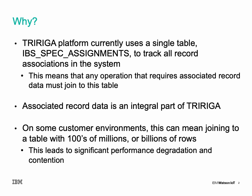So why are we making these changes? Currently the TriRiga platform uses a single table called the IBS Spec Assignments table to track all record associations in the system. This means that any operation that requires associated record data must join to this table, both from and to the record in question.